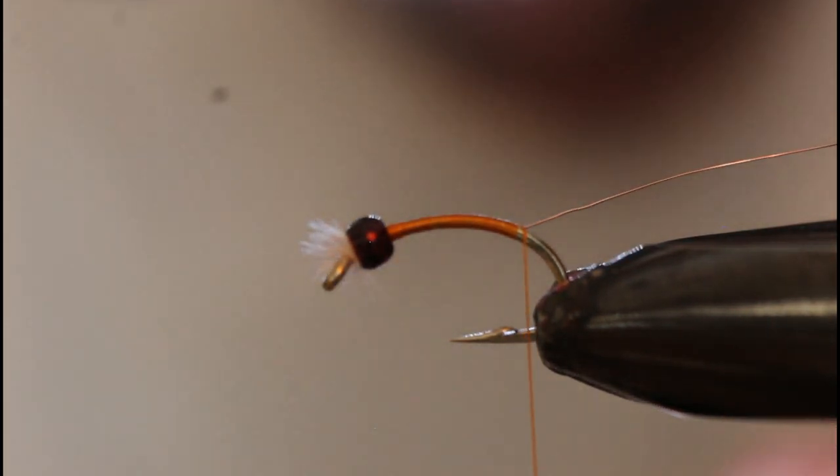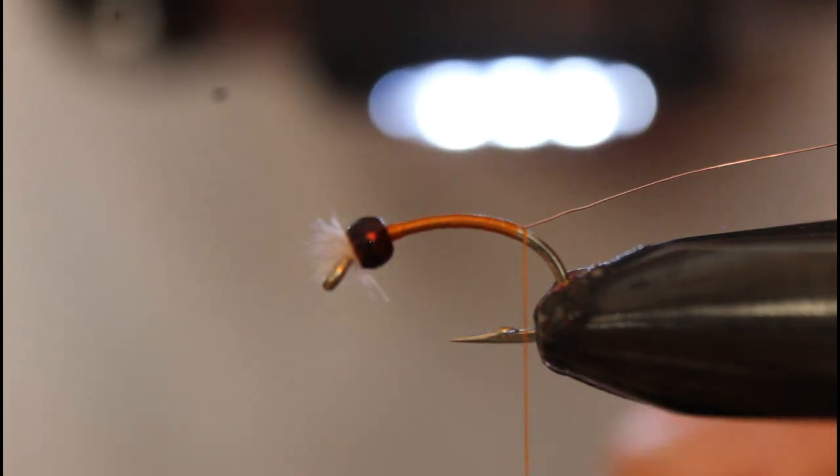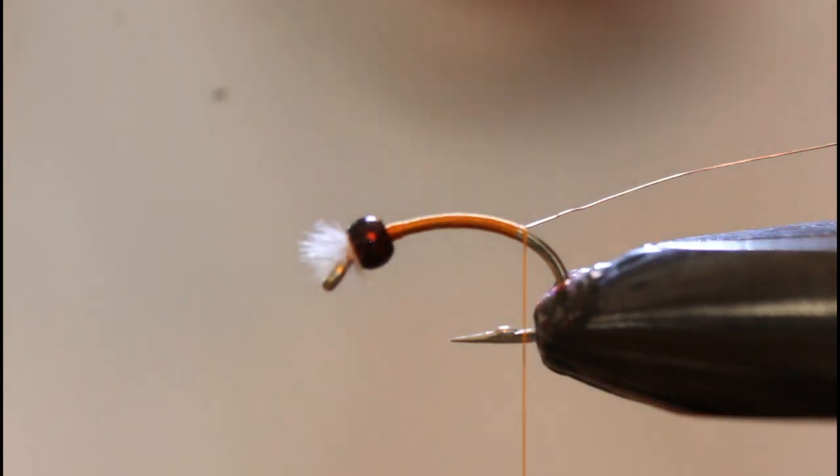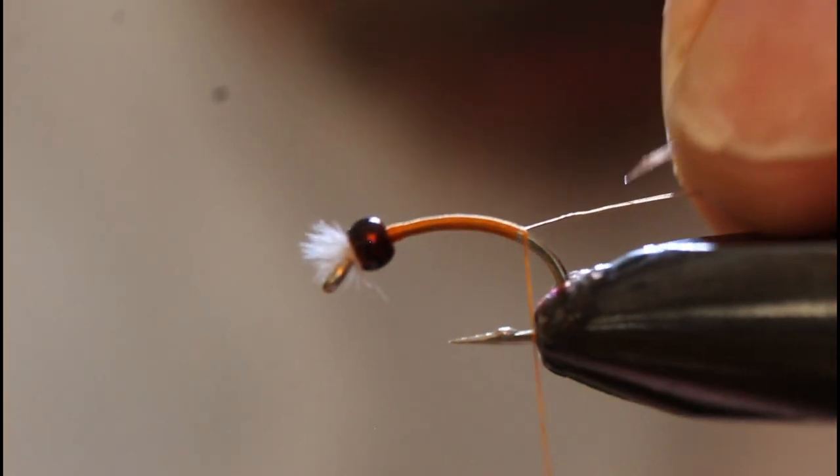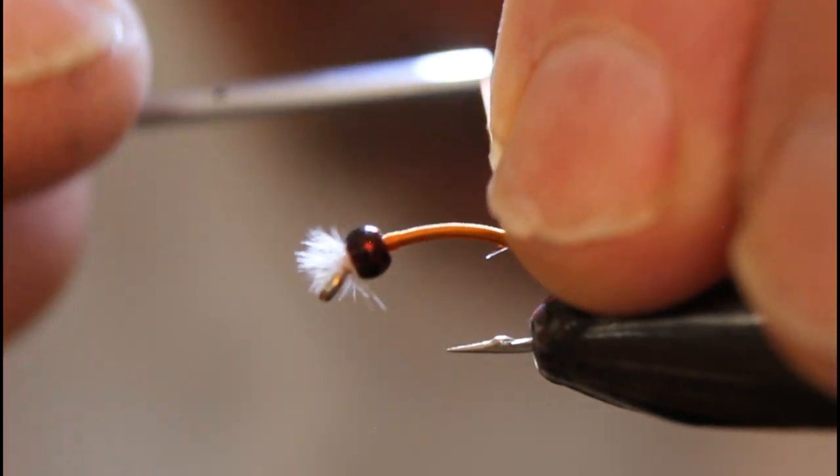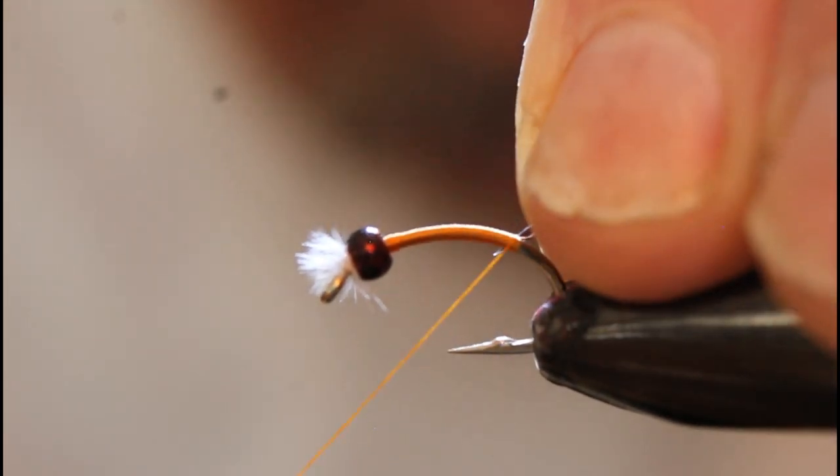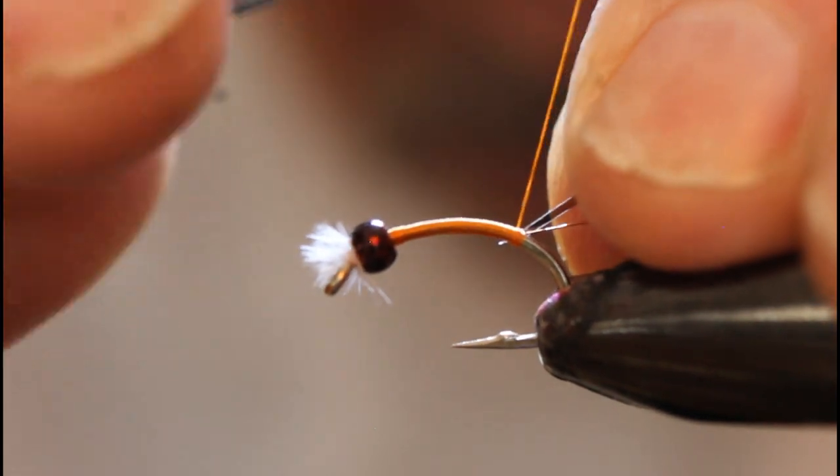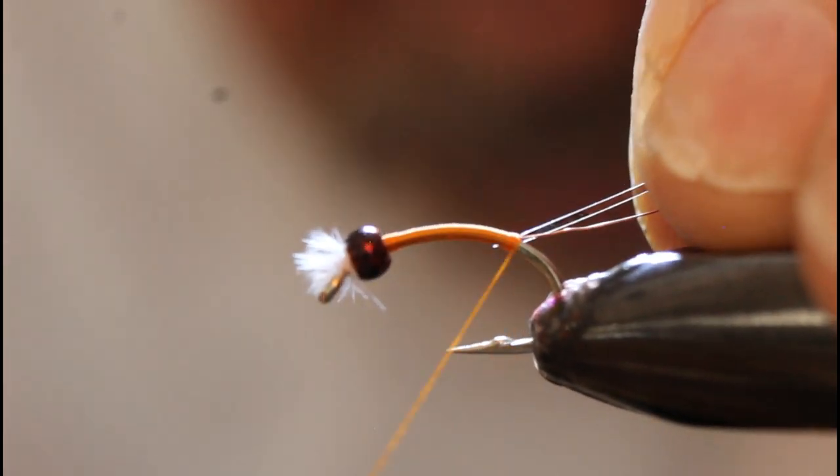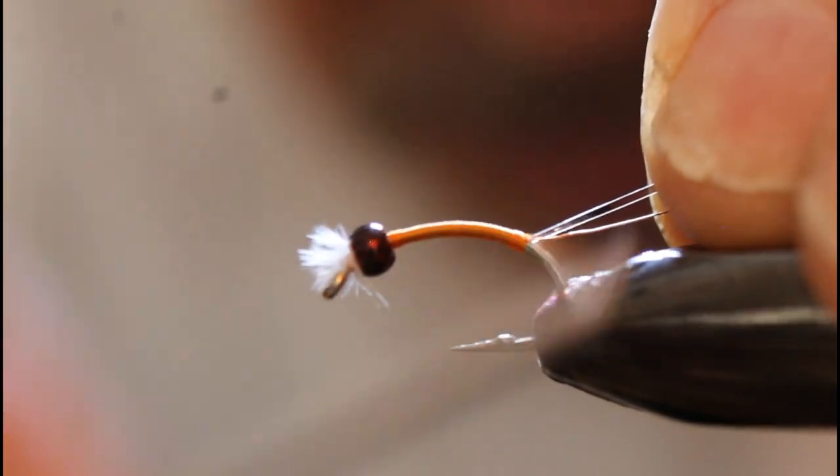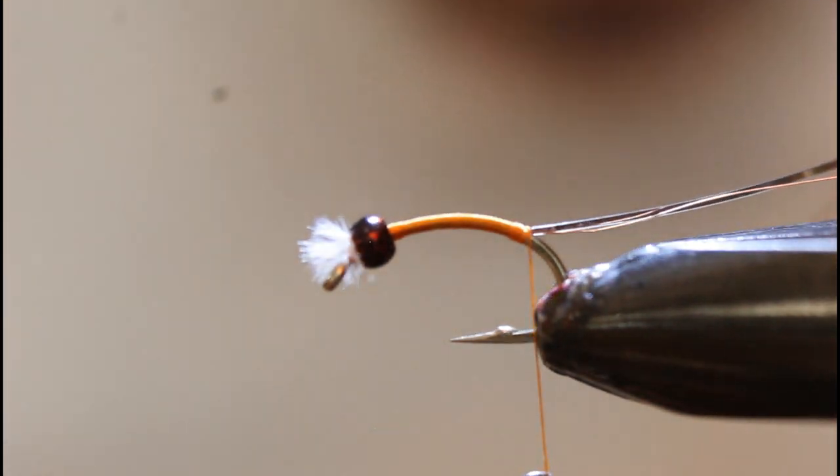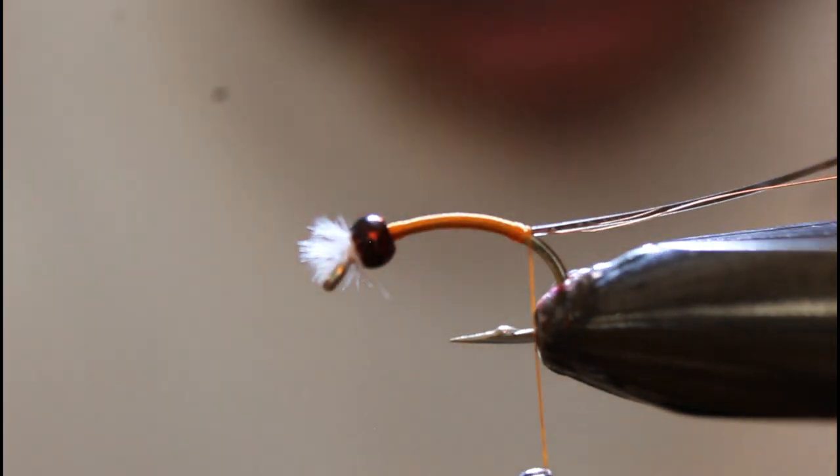It comes as small as 0.5 and as wide as one millimeter, and I'm using the 0.75 for this hook. I'm using a number 10 Tiemco scud hook in here, but of course you can tie this smaller. Part of the reason for using the hook this size is you see pupae that size, but also for the videography it just shows up better on the camera.